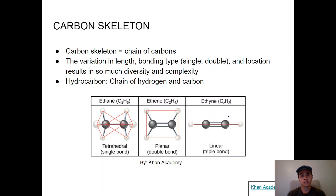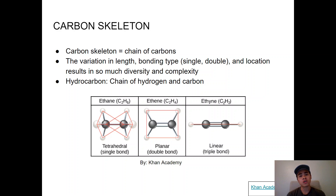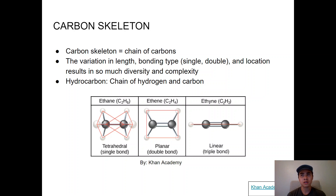A carbon skeleton is essentially a chain of carbons. You can write it out as a series of C's showing bonds, or use a zigzag notation where each corner represents a carbon. Carbon skeletons can vary in bond type — single or double bonds — and the position of those bonds creates enormous complexity and diversity among different molecules. A very common form is a hydrocarbon, where carbons bond to each other and each carbon has hydrogens attached — hydro for hydrogen, carbon for carbon.